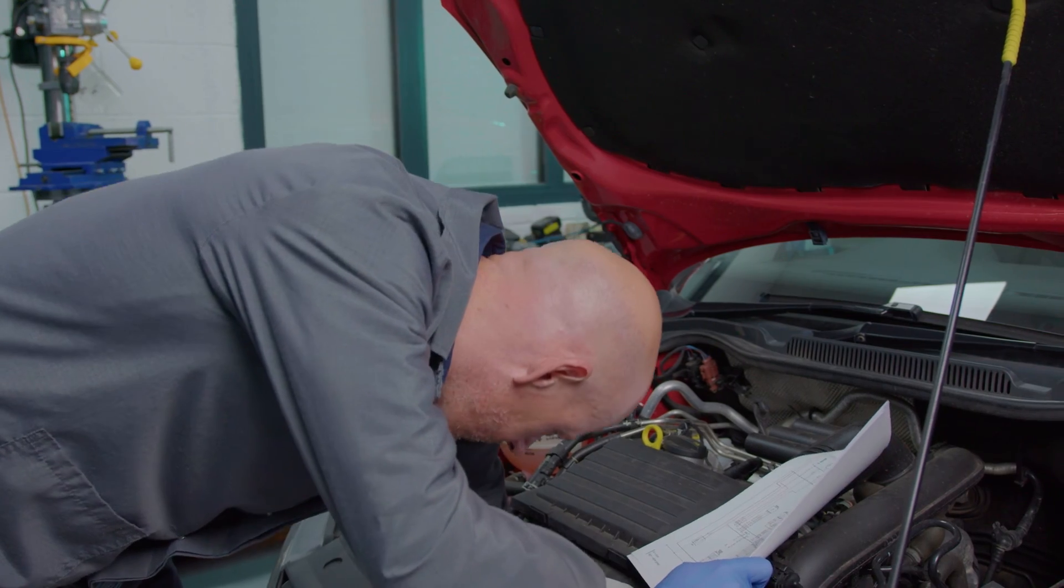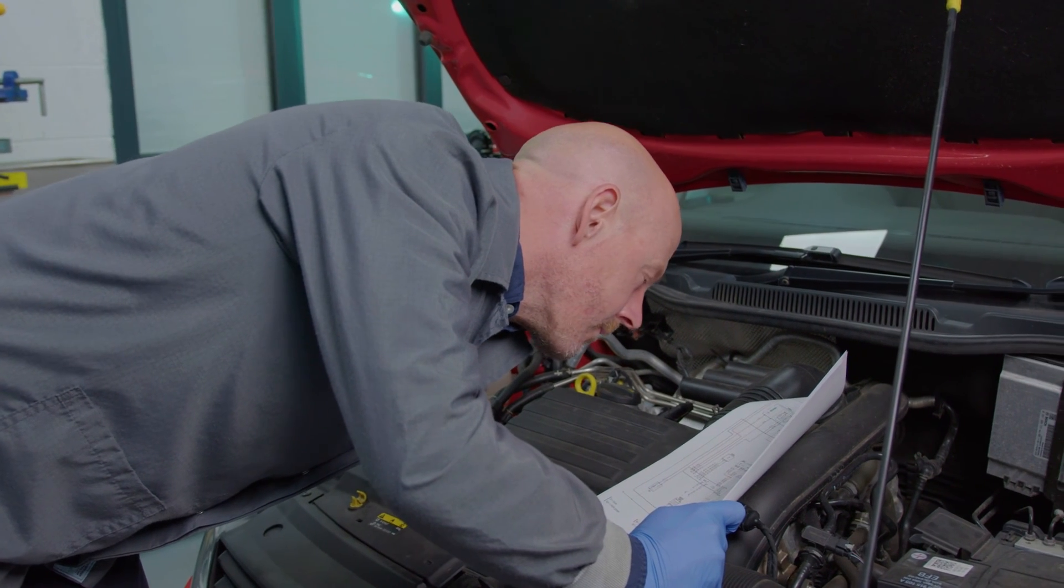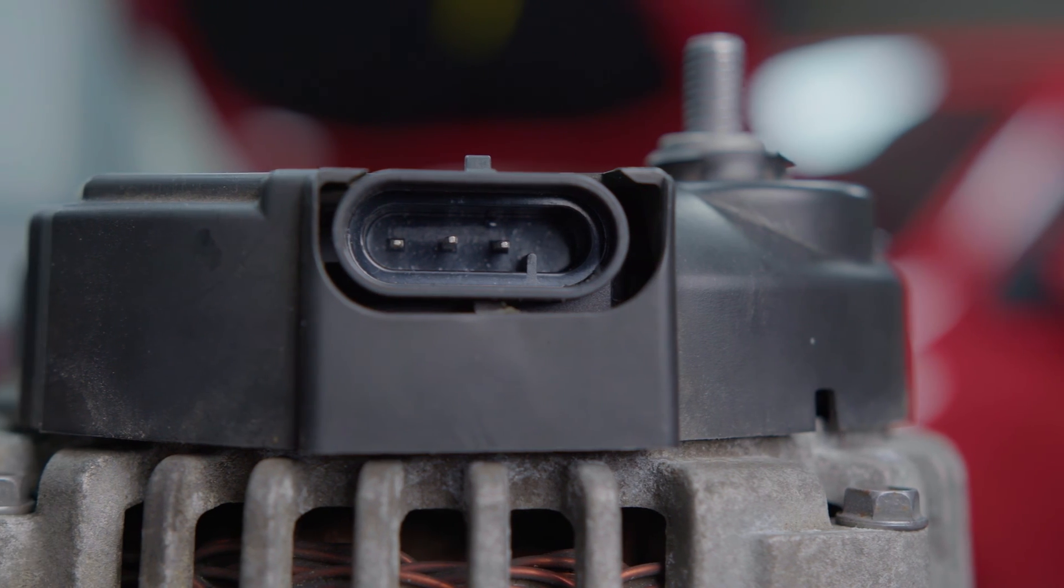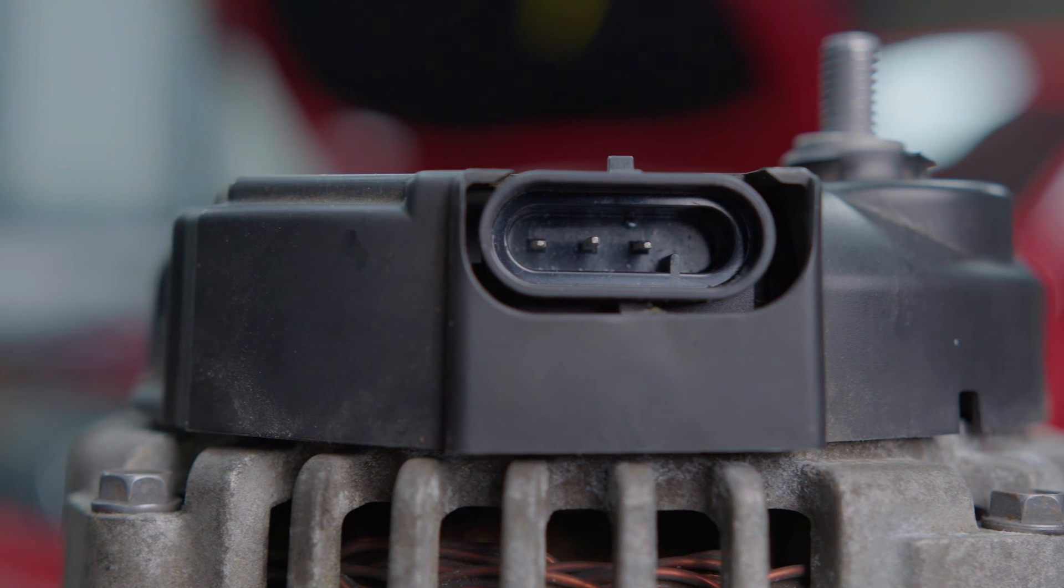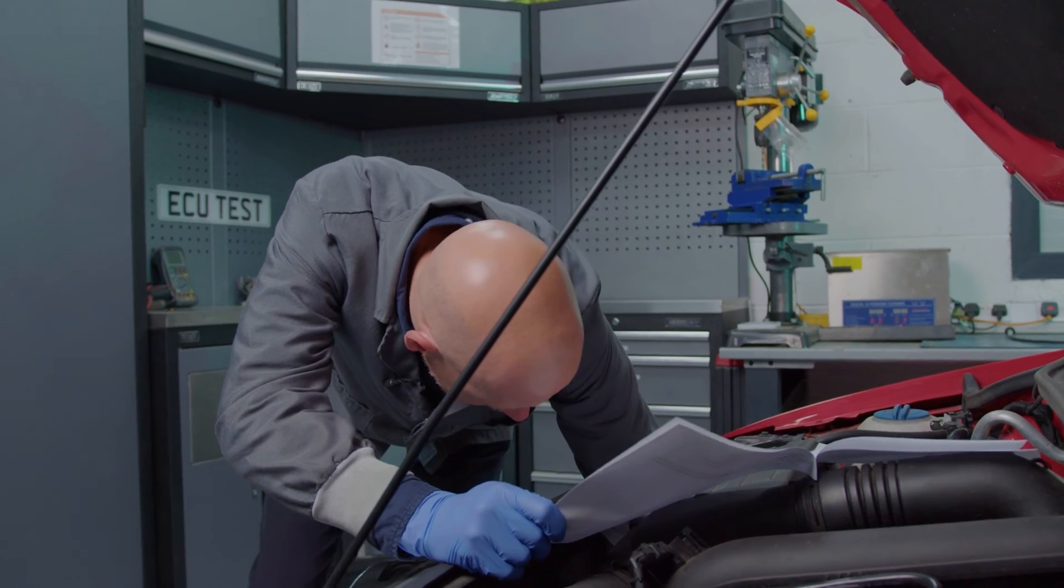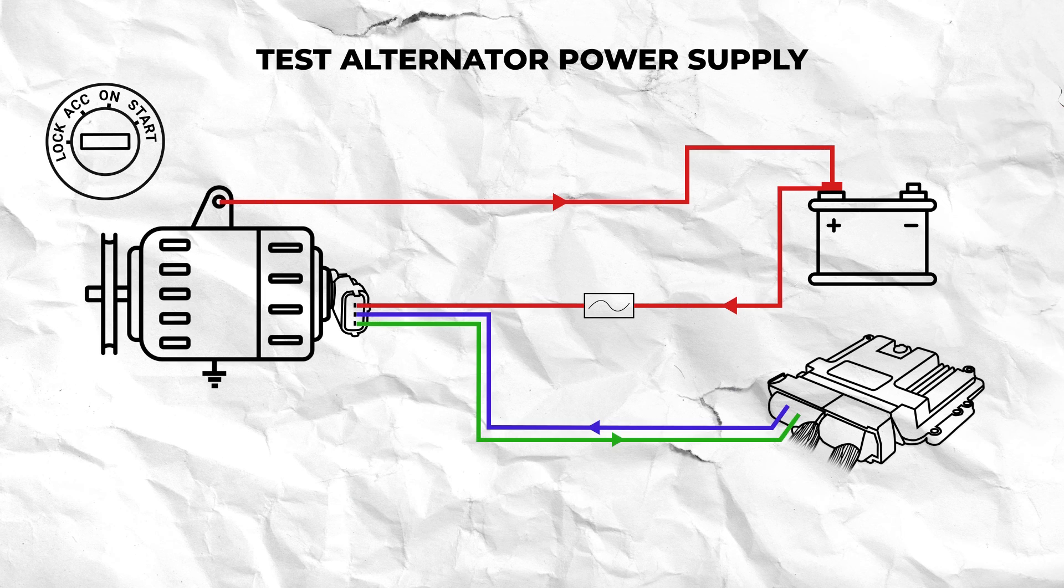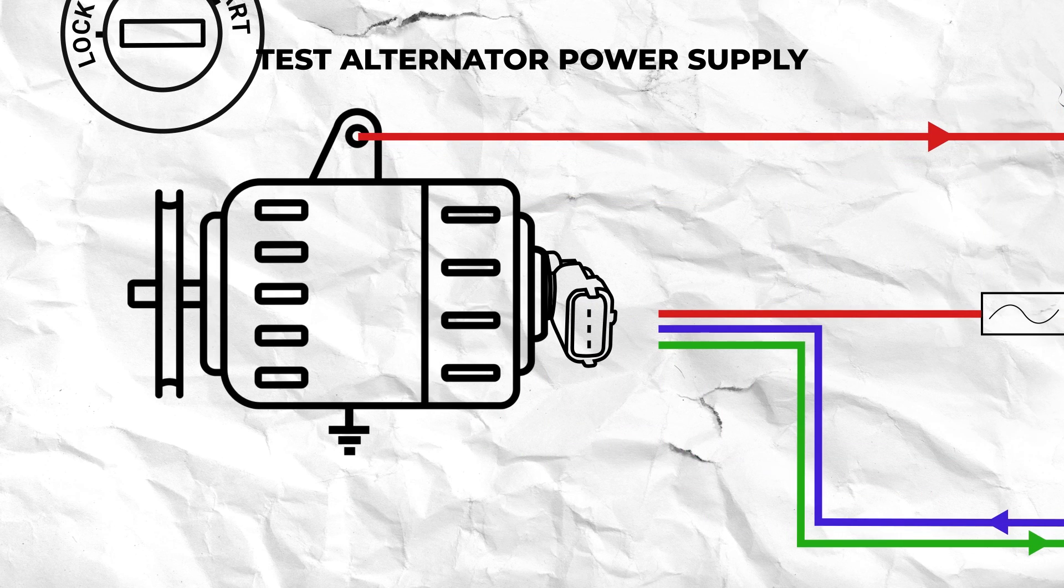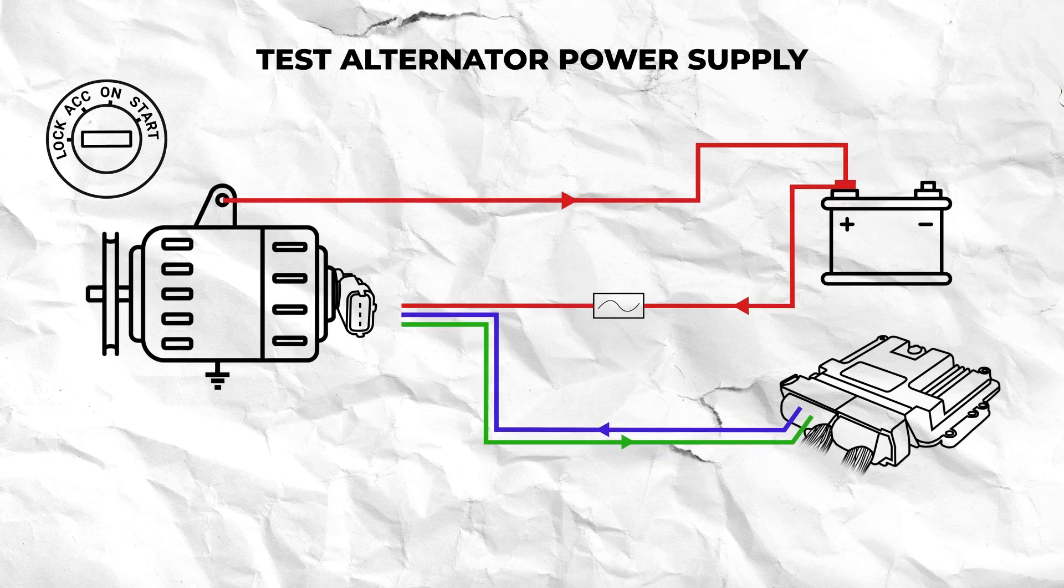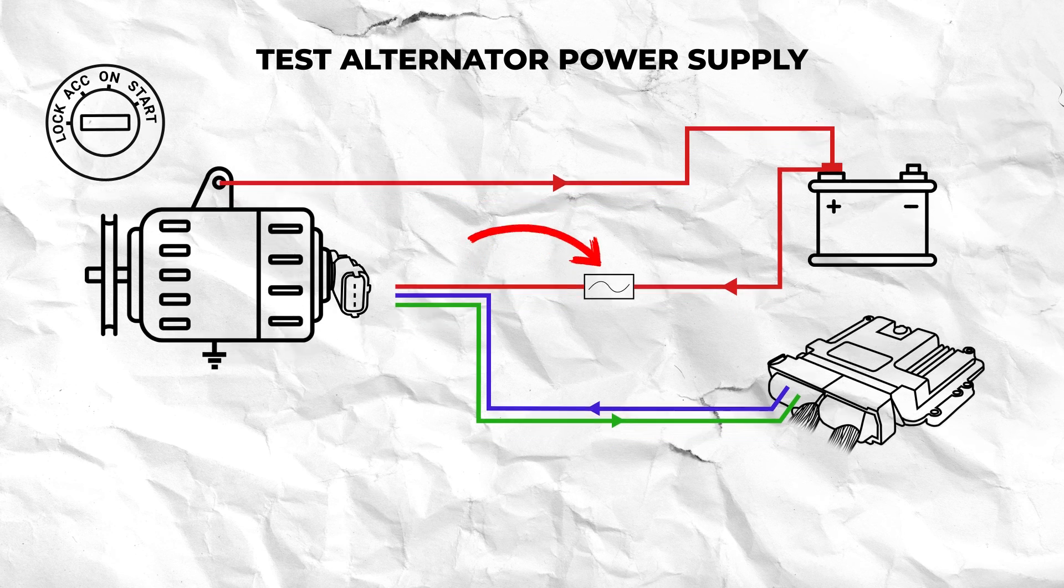With the engine off unplug the alternator connector and use a wiring diagram to identify the high reference supply terminal. Alternator connectors can have anywhere between one to four pins depending on the system so ensuring you know the functions of each terminal is key to avoid misleading results. In this example we will be looking at smart charging systems with either three or four pin connectors where the alternator's voltage regulator is supplied by a fused permanent power supply from the battery.